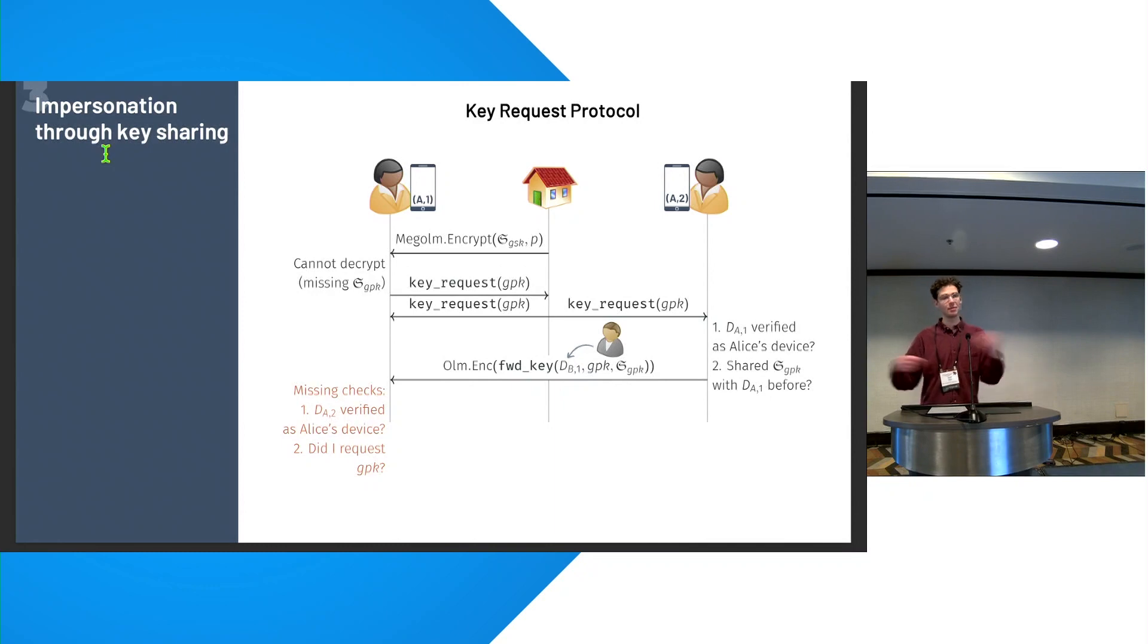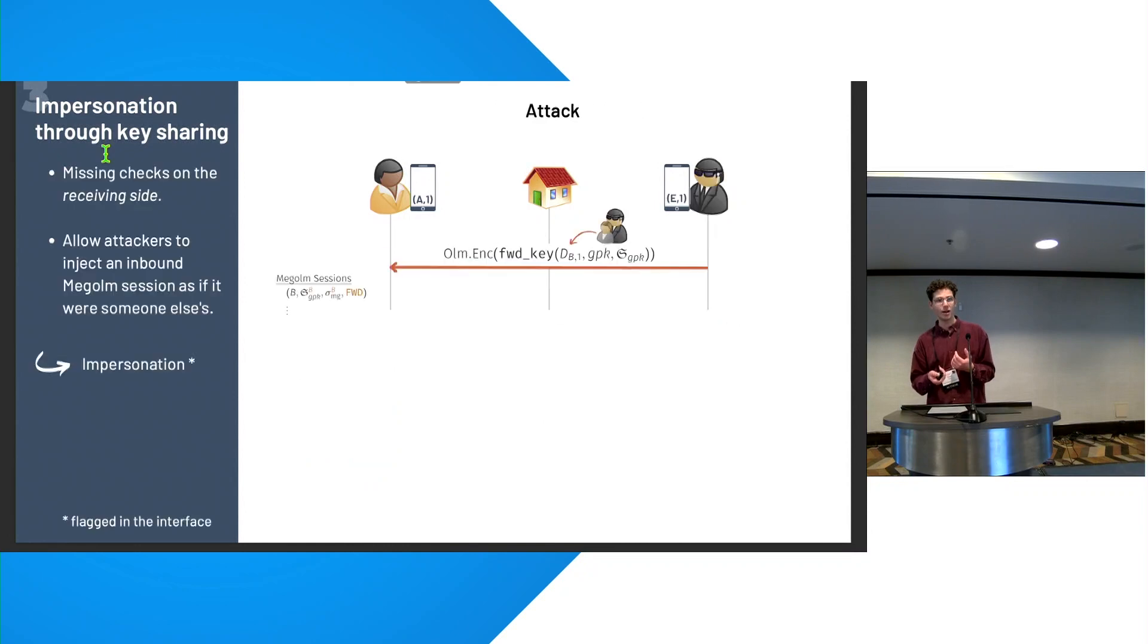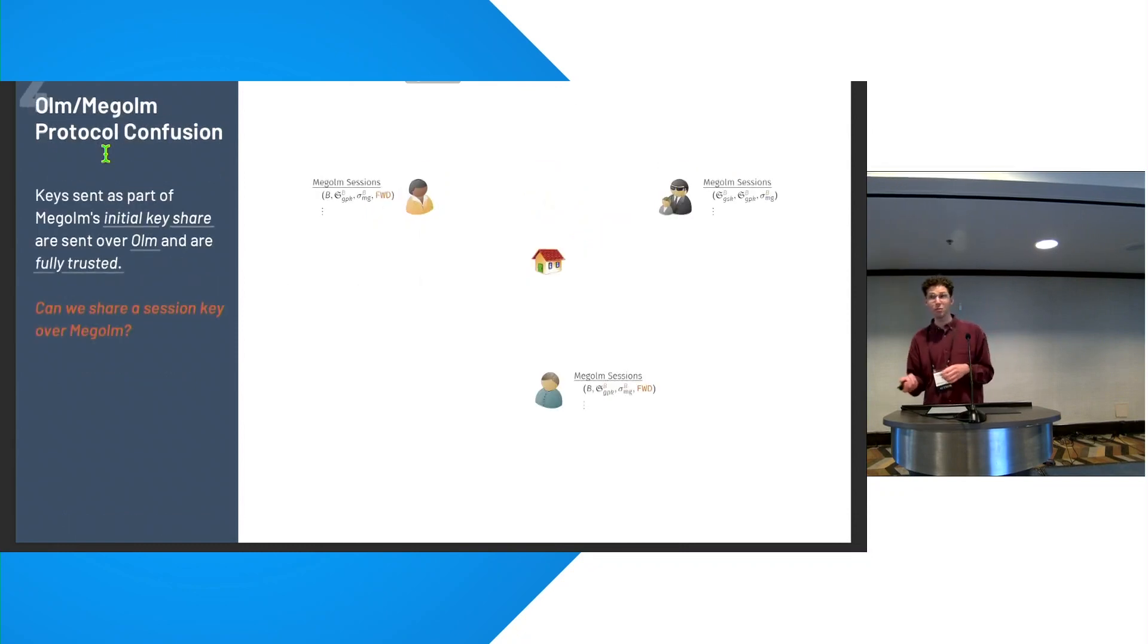The next three attacks build iteratively upon one another, starting with some impersonation attacks, and we end up with a confidentiality break. So here we've got the key request protocol in its normal state. This is a normal execution where Alice has two devices. Her first device receives a message that it can't decrypt, so it asks one of her other devices, can I have the decryption key for this? The other device will say, yes, you can have it, because you seem like one of Alice's devices. I just need to do some trust checks. They'll encrypt this alongside a little tag to say who the owner of the session is, so in this case it's Bob. But when Alice receives that message, she won't do any checks. So actually, in our attack here, all Eve needs to do is send one of these messages without prompting, claiming that a session she's generated is owned by Bob, and Alice will be able to decrypt these messages and attribute them to Bob. But there's a bit of a caveat with this attack, which is that all messages sent through this key request protocol are flagged as less trusted or as forwarded keys. So we'd like to improve upon that, and that's what our next attack does.